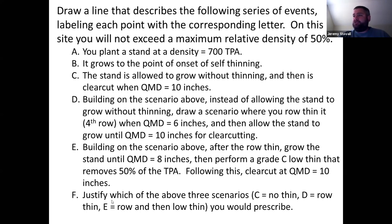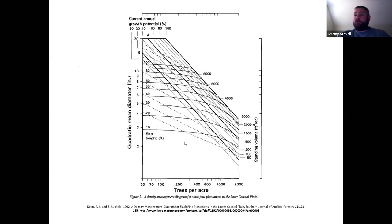All F asks you to do is justify which scenario you would go with based on the best information you have on this diagram. So are you going with the no thin, just clear cut it, scenario C? Are you going with the just row thin it, and then clear cut it, scenario D? Or are you going with the row thin, then a second low thin, then a clear cut scenario E? So it's a no thin, one thin, and two thin scenario.